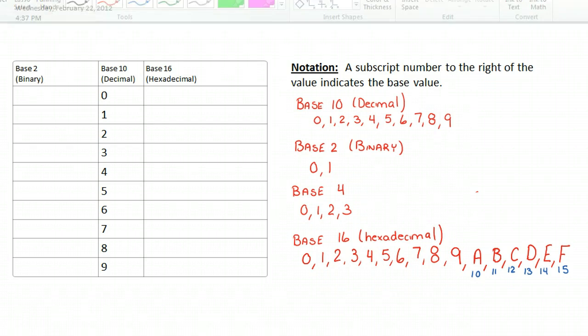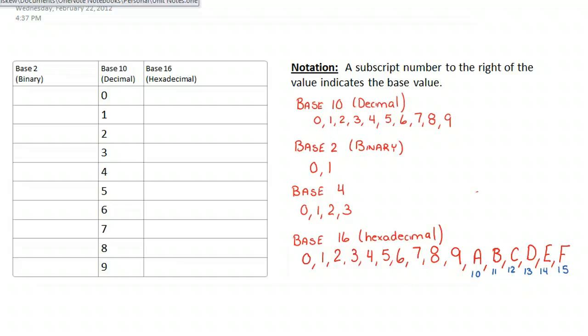So the next type of notational idea we want to make sure we understand is how do we tell what type of number we're writing? Because I might write the number 1, 0.